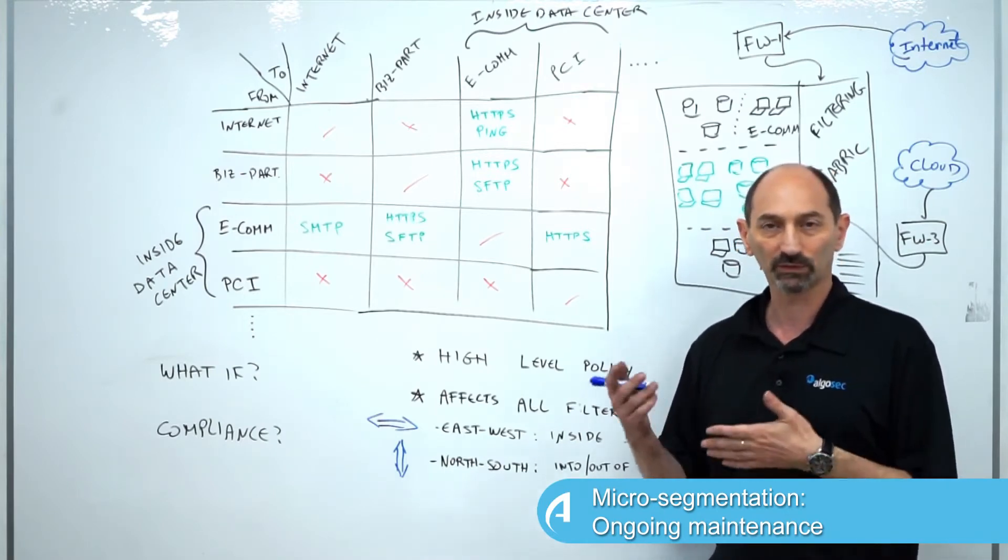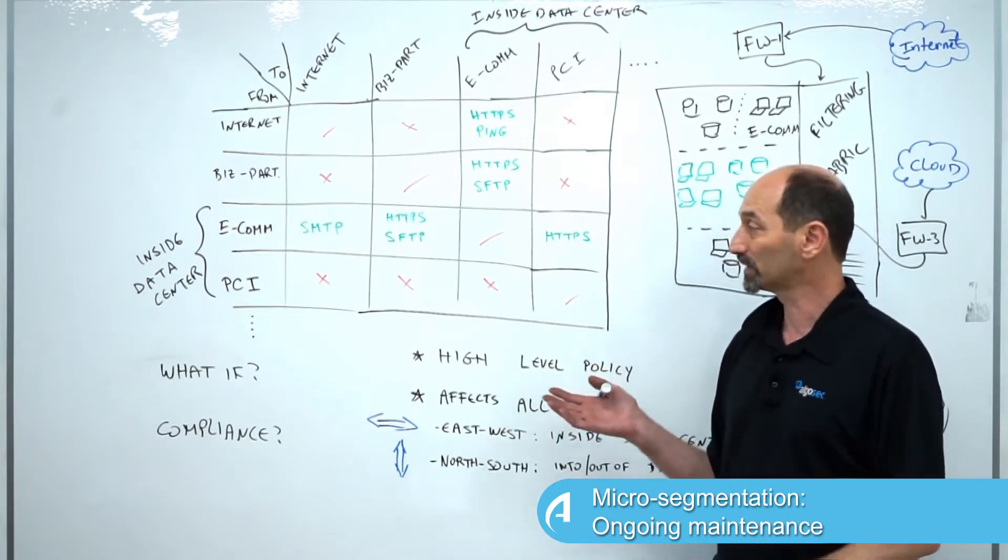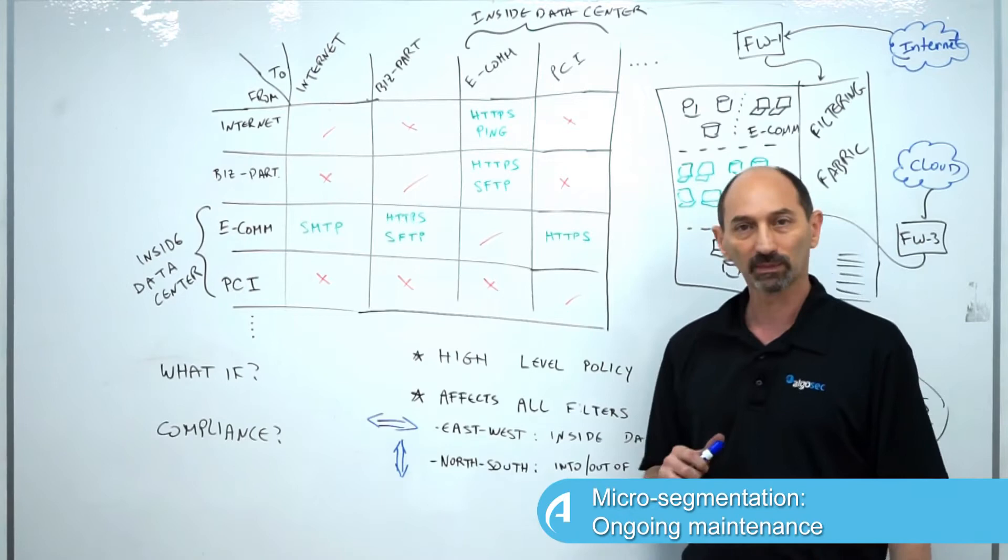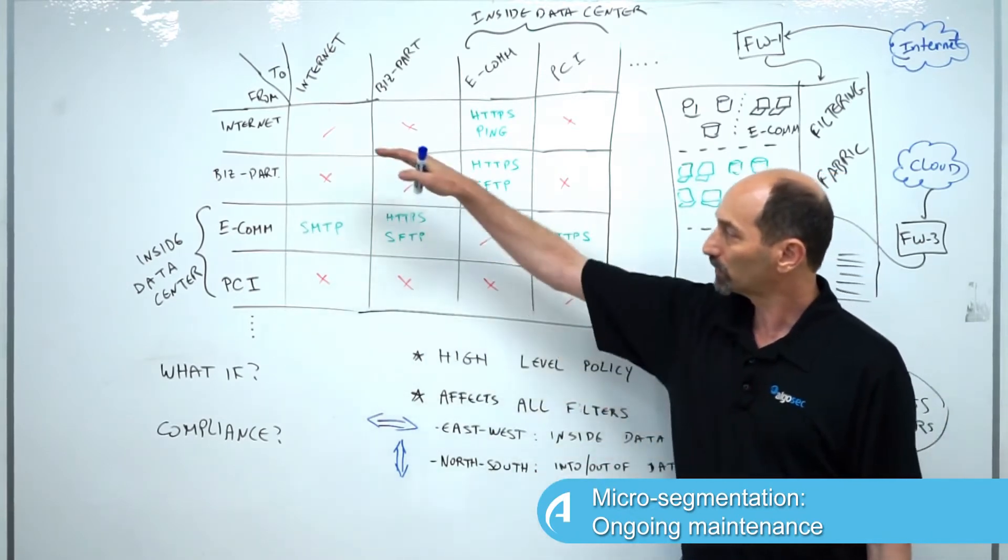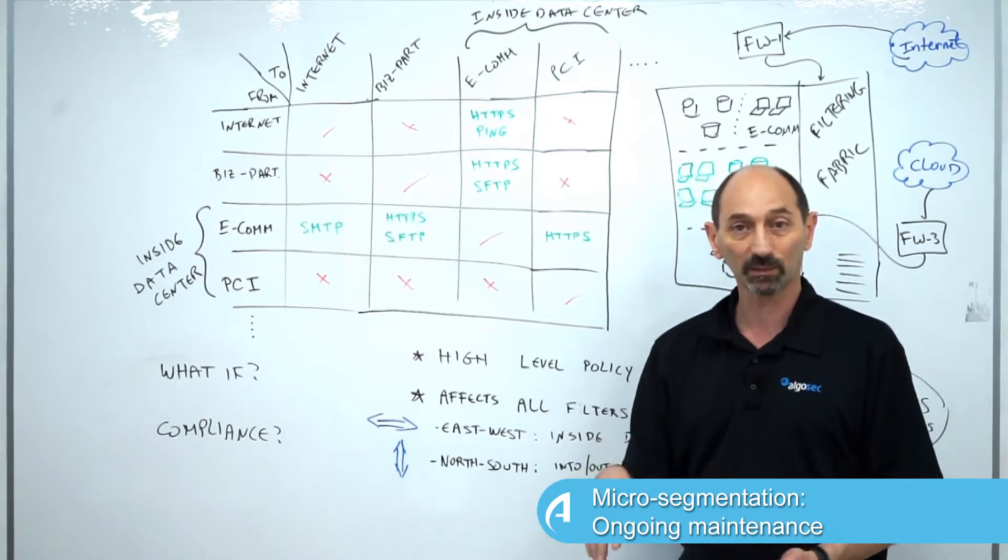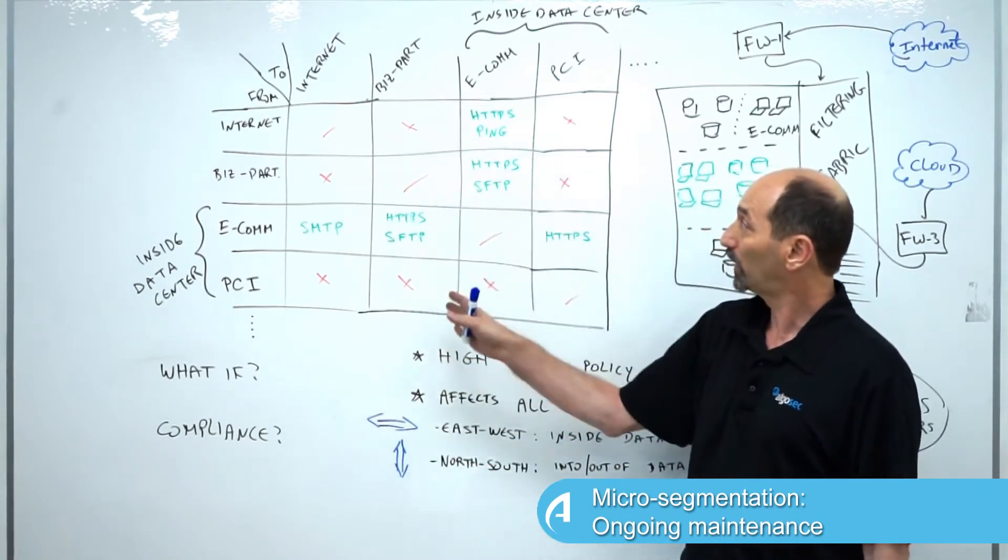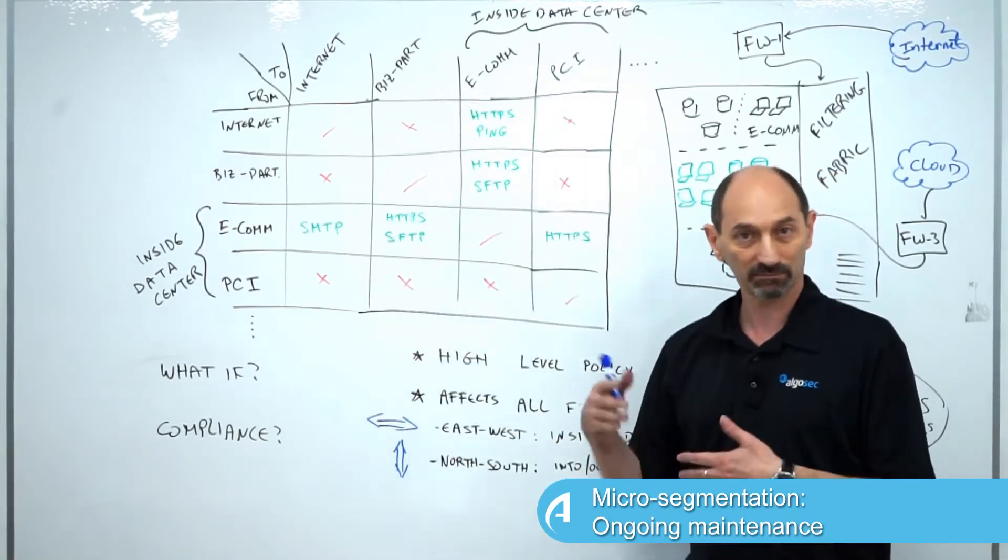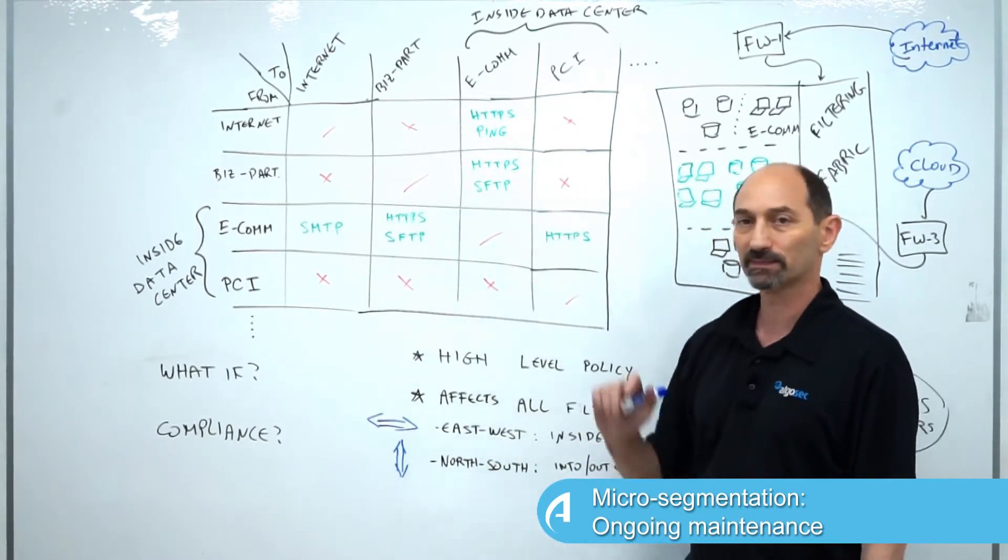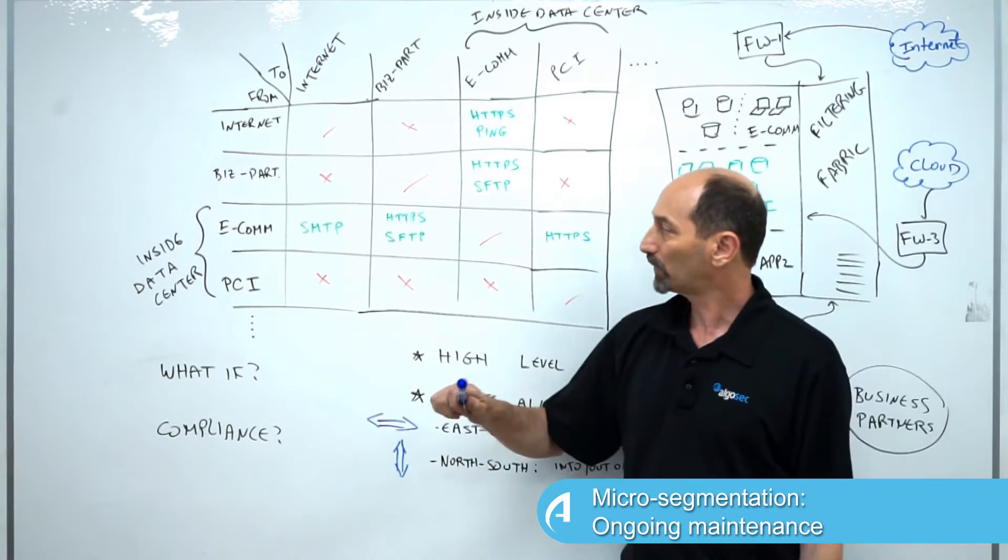A convenient and common way for information security people to think about this is to use a tabular format that I've spoken about in the past, where each of the rows in this matrix represents a zone or segment in the network. Likewise, every column represents the same zones.